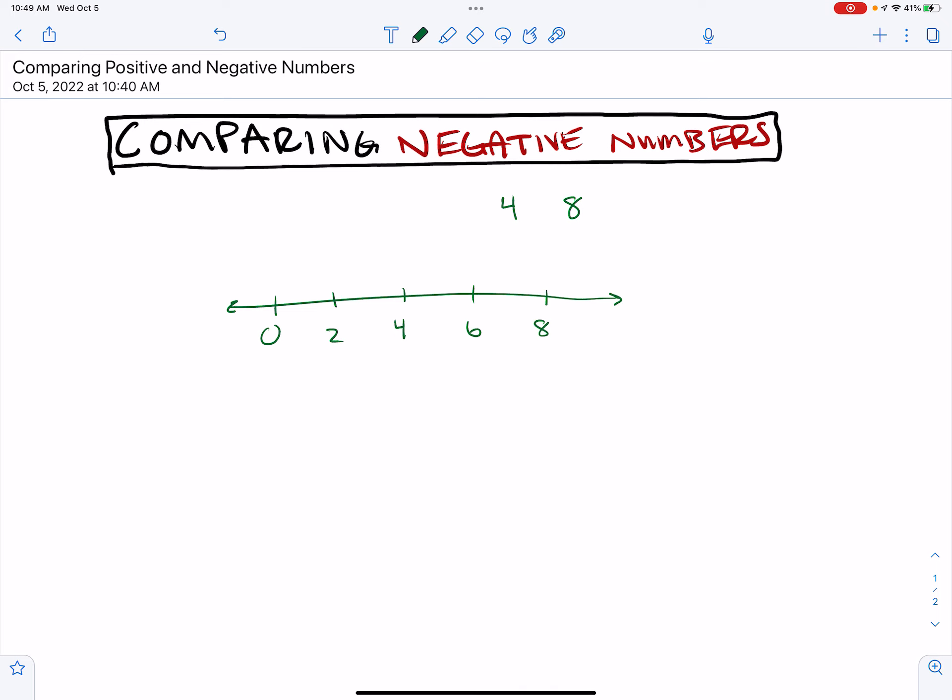Back to comparing positive numbers for a moment. We know that a positive 4 is 4 units to the right of 0, and then 8 is 4 units to the right. As we travel to the right, the value increases. And so we know that 8 is greater than 4.